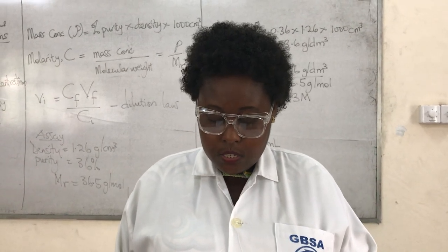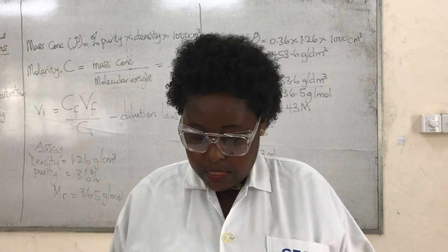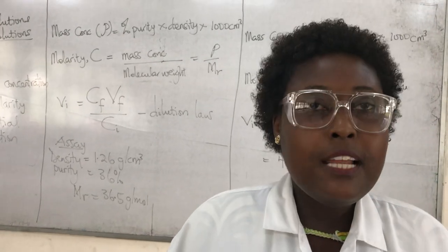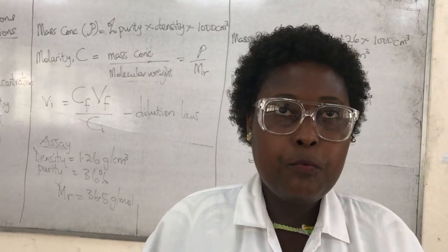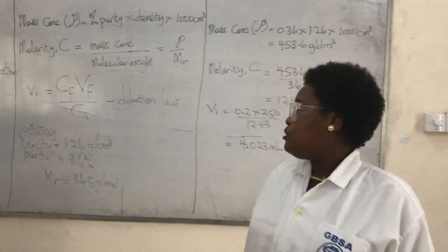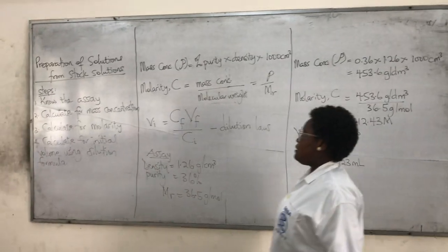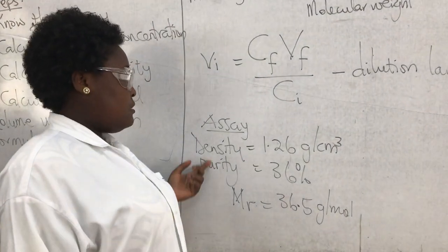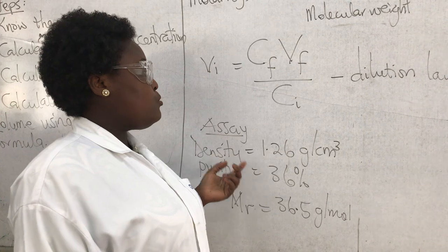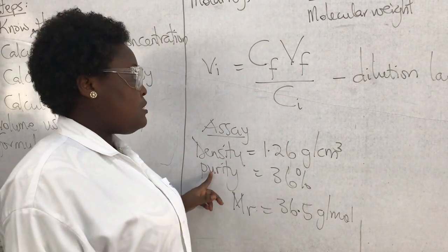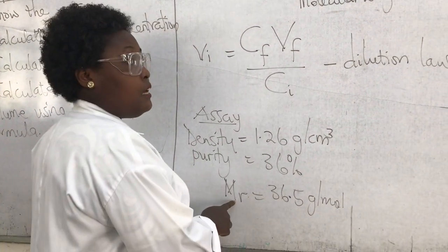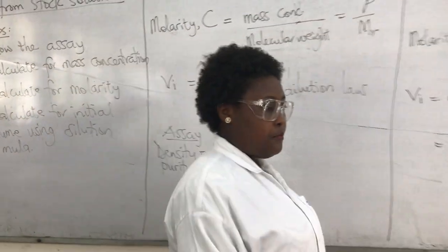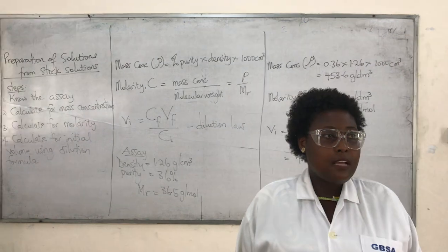The assay information given is: the density of HCl is 1.26 g/cm³, the percentage purity of HCl is 36%, and the molecular weight of HCl is 36.5 g/mol. I'm placing this information on the board — density 1.26 g/cm³, purity 36%, molar mass 36.5 g/mol.